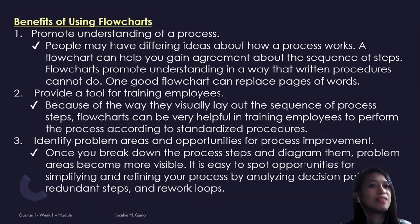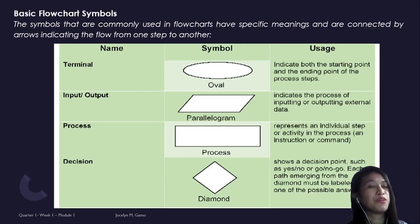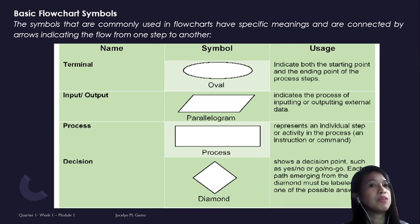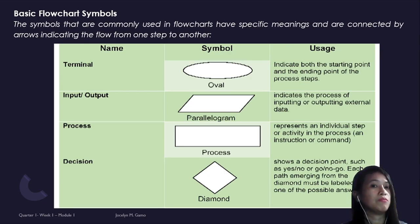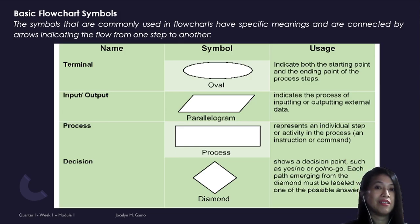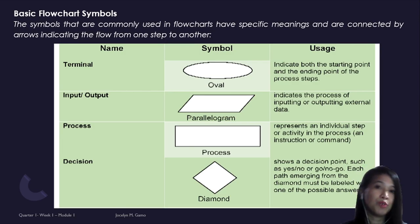Now, what are the different elements of a flowchart? The first one is what we call the terminator or terminal symbol — that oval shape. A terminator or terminal symbol indicates the starting point and the end point, meaning it should always be the first symbol seen at the top and the last symbol seen at the bottom of your flowchart.